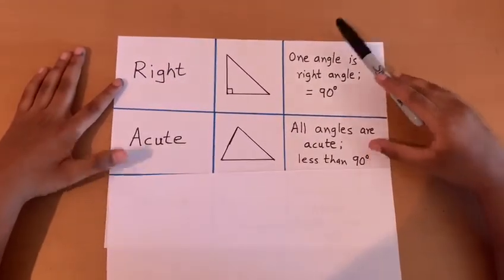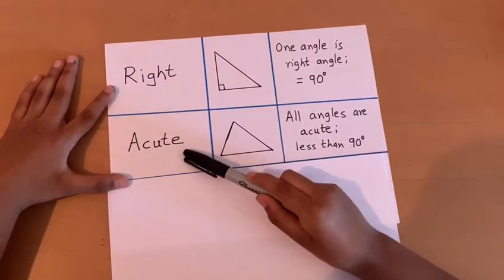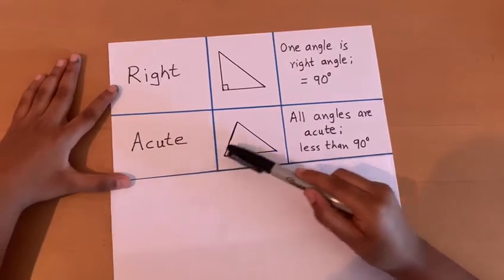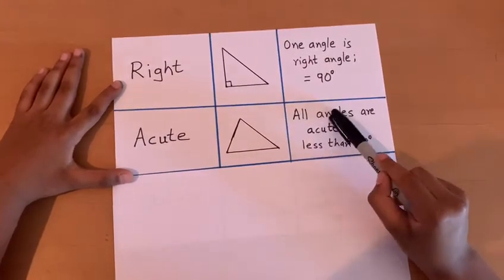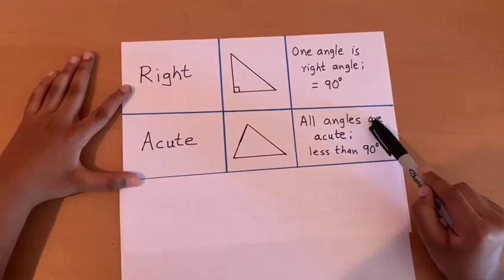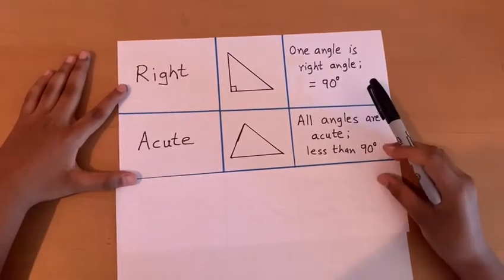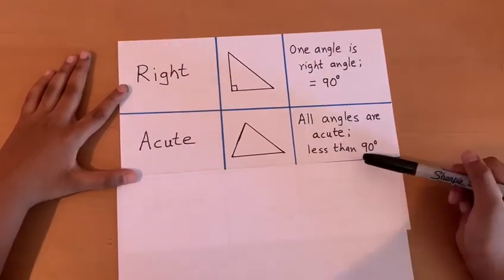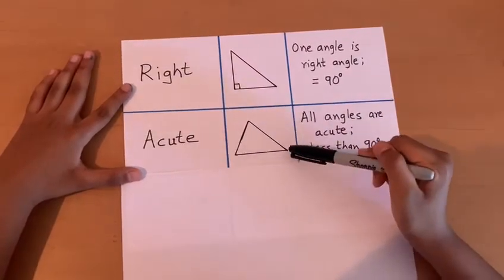Our second type of triangle is the acute triangle. This is what an acute triangle looks like. All angles in an acute triangle are acute. Acute means less than 90 degrees. We can see here that each angle is acute.